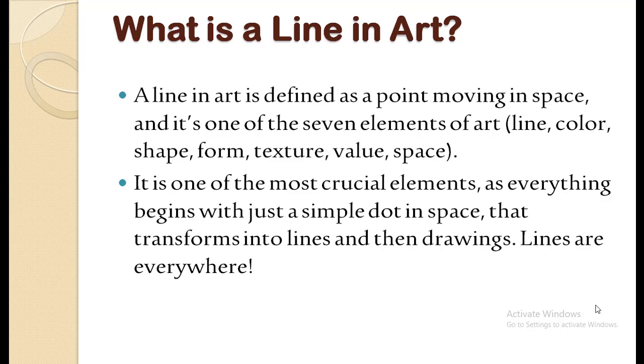Now I am going to tell you what is a line in art. A line in art is defined as a point moving in space and it's one of the seven elements of art: line, color, shape, form, texture, value, space. It is one of the most crucial elements as everything begins with just a simple dot in space that transforms into lines and then drawings. Lines are everywhere.